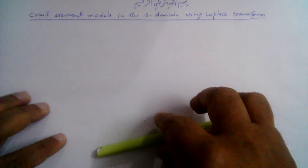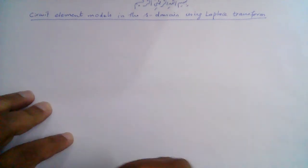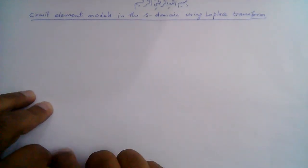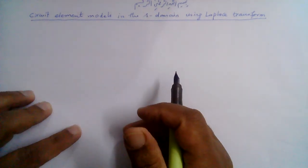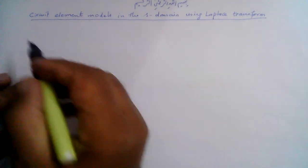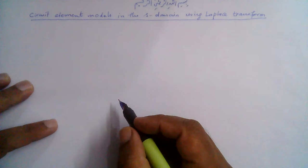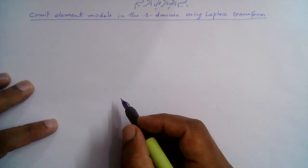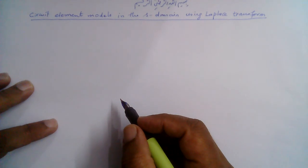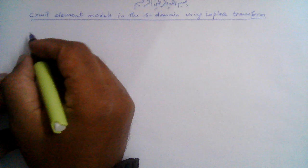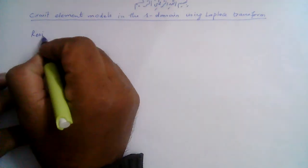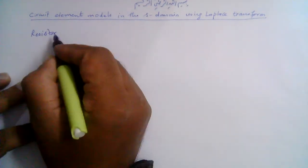Bismillahirrahmanirrahim. Let us discuss the circuit element models in the S domain using Laplace transform. We have three basic circuit elements: resistance, inductor, and capacitor. For each of these three elements, we will derive the equivalent models in the S domain.